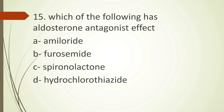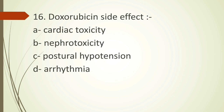Fifteenth question: which of the following has aldosterone antagonist effect — option A amiloride, option B furosemide, option C spironolactone, option D hydrochlorothiazide? Aldosterone antagonists are mainly potassium-sparing diuretics. The correct answer is option C, spironolactone, which is an aldosterone antagonist and a potassium-sparing diuretic.